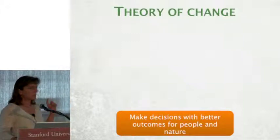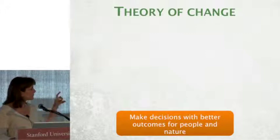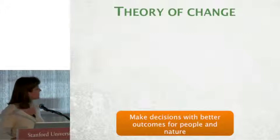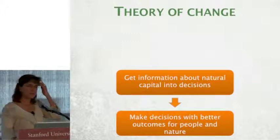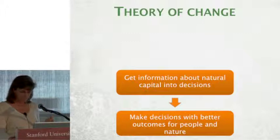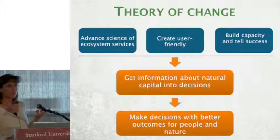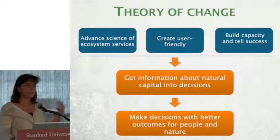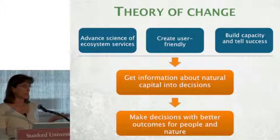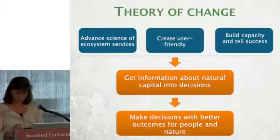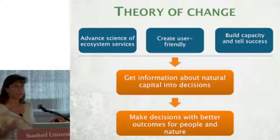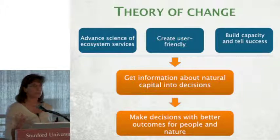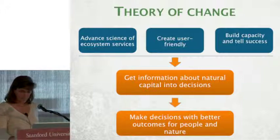NatCap, as we call ourselves, is a four-way partnership, and the ultimate goal of all of our science is to help institutions and individuals make better decisions that lead to better outcomes for people and nature. We do that in three main ways: by listening to end users whose questions drive advances in science and software; by creating user-friendly tools at the scales that help them answer their questions; and by building capacity through training and disseminating stories so people realize it's not as daunting as it might seem.